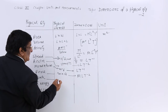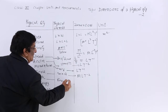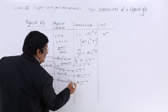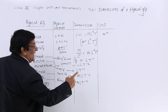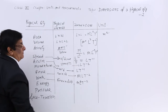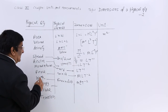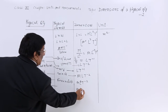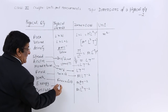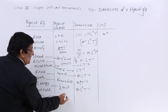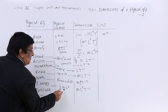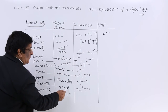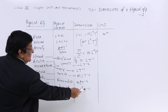Then work. Work is force multiplied by displacement. Force has dimension M L T⁻², and displacement adds one more length, so work has dimensions M L² T⁻². Then energy — energy is basically work done — so it has the same formula M L² T⁻². We can verify with kinetic energy: half M V². Half has no dimension, M has dimension of mass, speed has L T⁻¹, and squared gives L² T⁻², resulting in M L² T⁻².